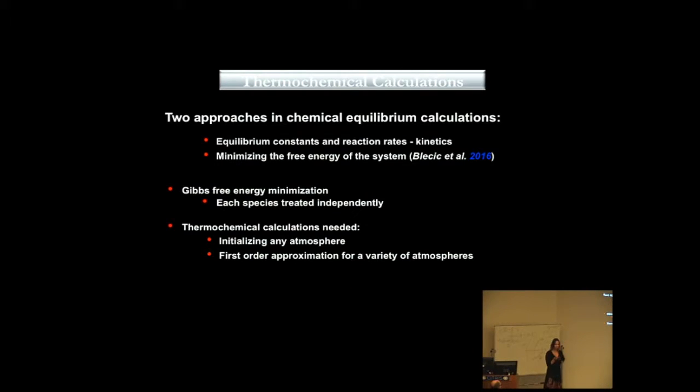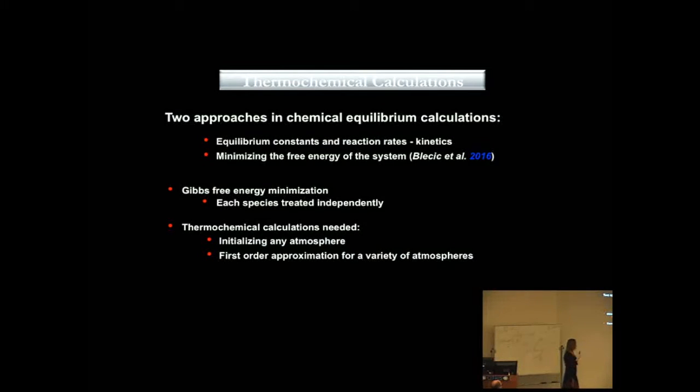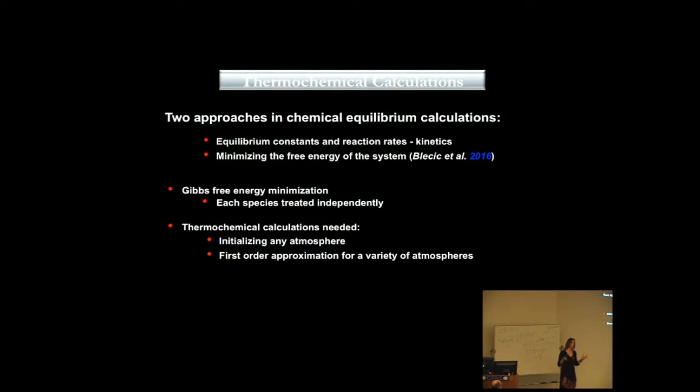There are also two approaches how one can calculate thermochemical equilibrium. First is to engage the equilibrium constants and reaction rates, which is called kinetics. And the other is to minimize the free energy of the system. Even though the kinetics approach is considered to be really comprehensive, because it starts from the deep of the planetary atmosphere when it can calculate thermochemical equilibrium, and then it goes up and includes the vertical mixing and quenching and photochemistry, there are some drawbacks with this approach.